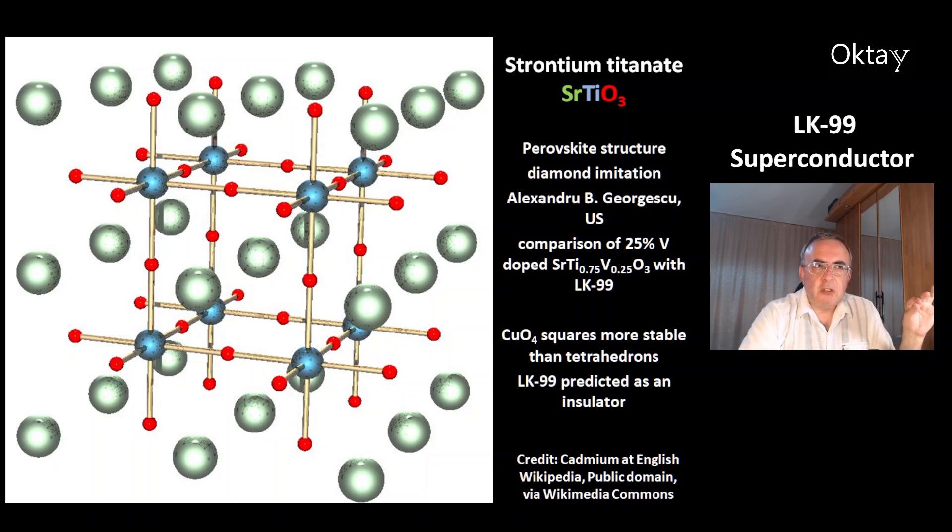He made a comparison of strontium titanate, which is doped by 25% vanadium, with LK-99. This scientist predicts that LK-99 copper tetroxide squares are more stable than tetrahedrons. He predicts LK-99 to be an insulator.